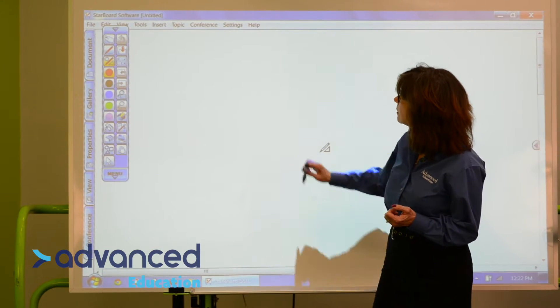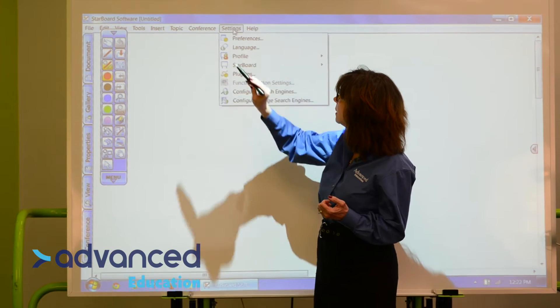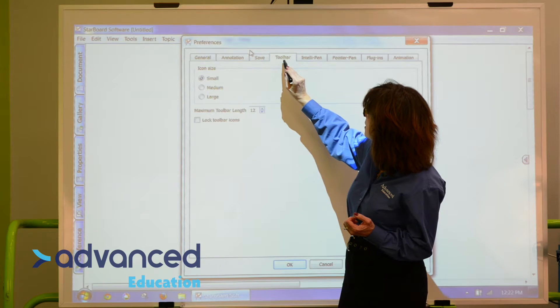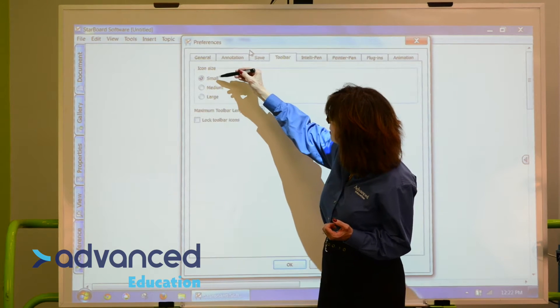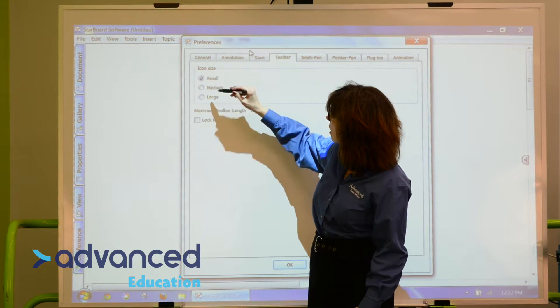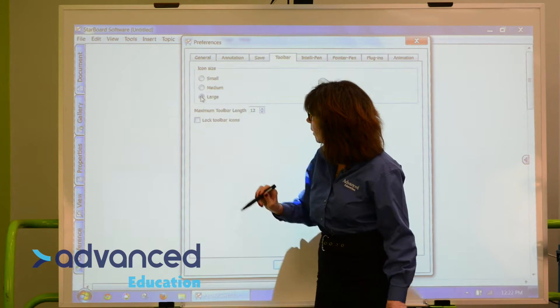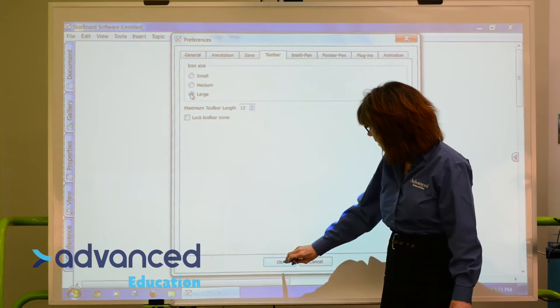To do that, I'm going to the settings at the top and choosing the preferences. And on the middle tab, the toolbar tab, you'll see that I can make it small, medium or large. I am going to make it large by checking in that little radio button and then clicking OK.